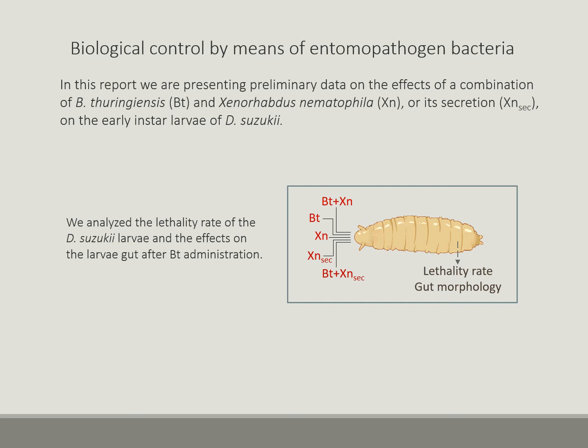With this communication we present preliminary data obtained from the application of biological control methods based on the use of microbial bio-insecticides. In particular, we are developing a protocol based on the combination of Bacillus thuringiensis with Xenorhabdus nematophila, the symbiont of the entomopathogenic nematode Steinernema carpocapsae, together with the secondary metabolites from the secretion of Xenorhabdus. The efficacy of the administration, done orally on agar traps, was verified by detecting the mortality rate of larvae at different post-treatment times. We also verified the effects of Bacillus thuringiensis on the gut of the dipteran larva.